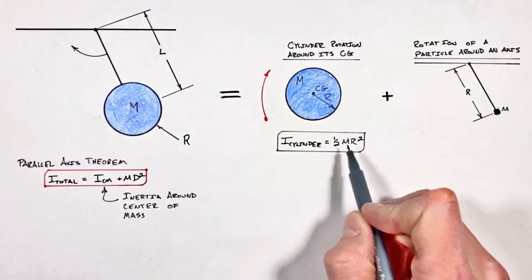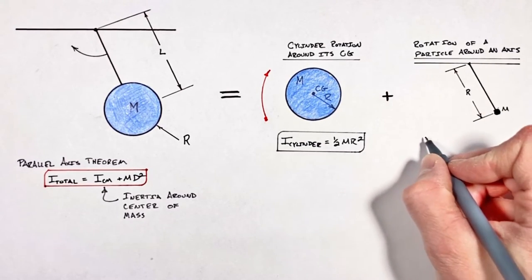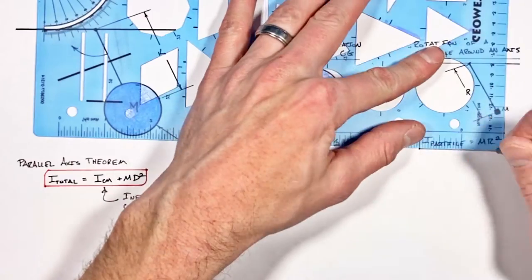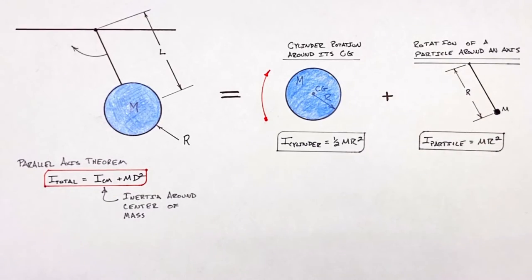and if you want to see a video of where this comes from, just click up here. I've got a video explaining exactly how to derive this. And then we have the rotation of a particle around an axis where the inertia of a particle is given by m r², and again I've got a video for that one too.